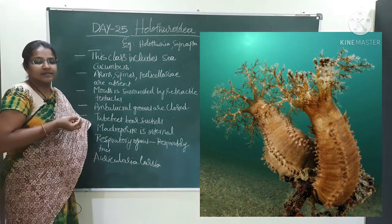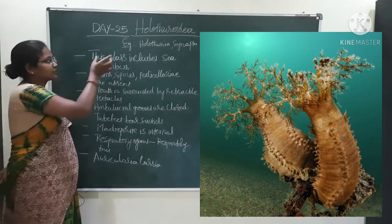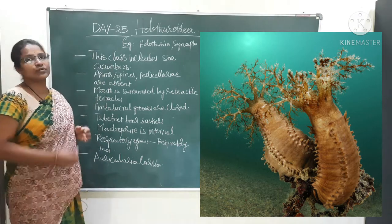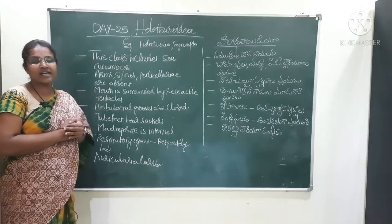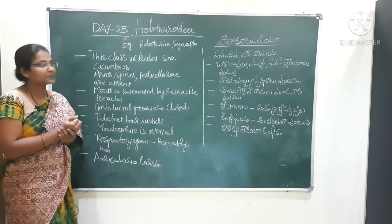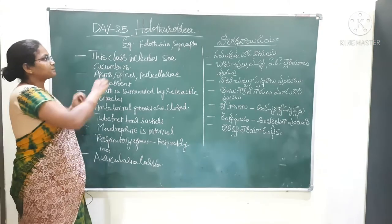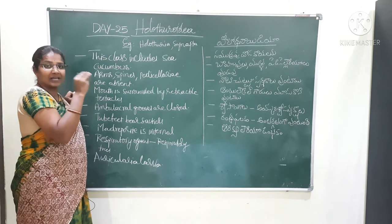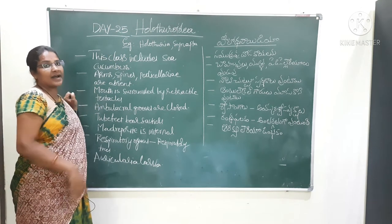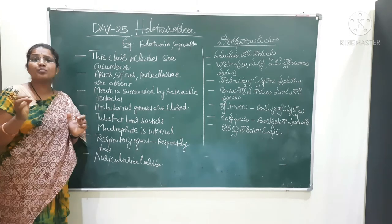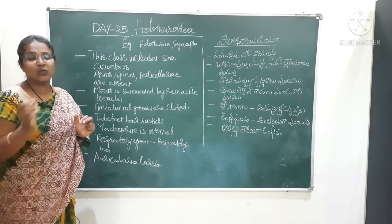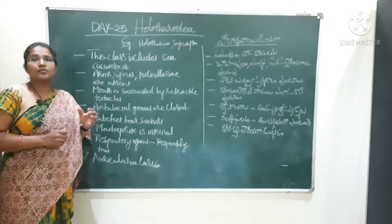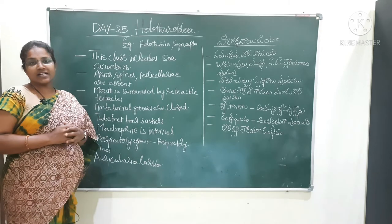Holothuroidea lo spines absent, tube feet untayi, pedicellariae untayi. Svasa angalu avaskara urukshalu — svasa urukshalu randhra fulakam antaragatanga untundi. Auricularia dhimbakam kallingu untundi.